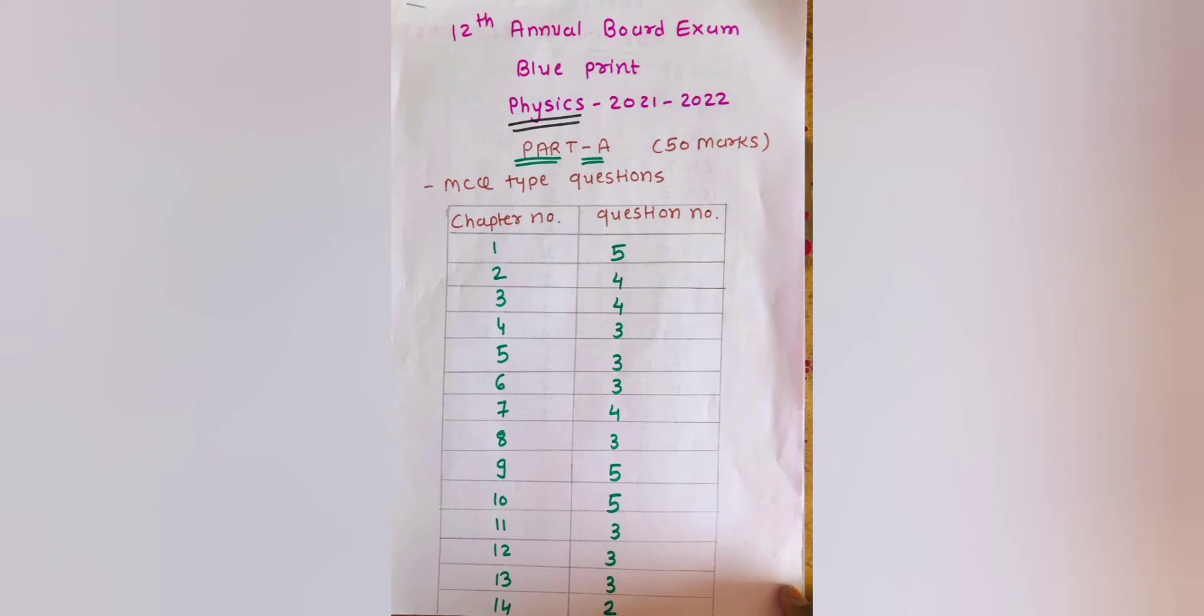As we know, first Part A includes multiple choice type questions. It covers 50 marks. 5 MCQ from Chapter 1, 4 MCQ from Chapters 2 and 3, and 3 MCQ each from Chapters 4, 5 and 6.